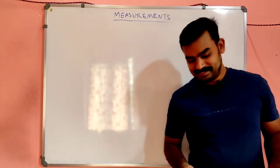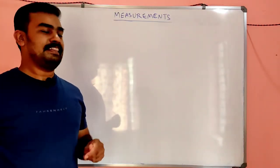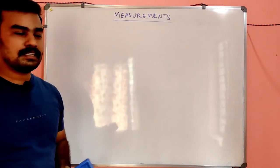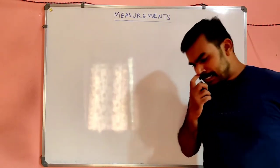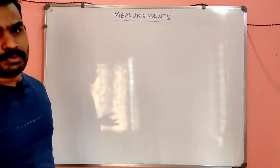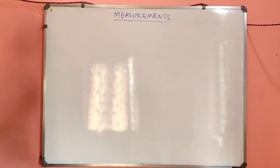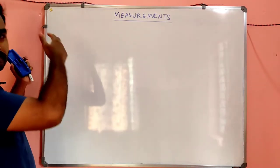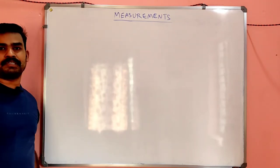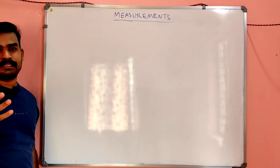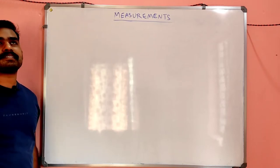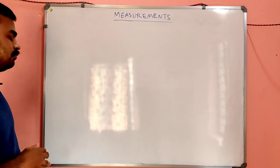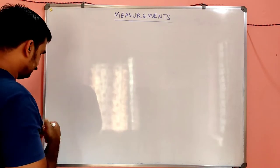Good morning. In the last class we studied the Wheatstone bridge and the balancing equation, and how to find the unknown resistance using the Wheatstone bridge. Today we are skipping Kelvin's double bridge as it is not that important for examination. The same principle applies: the product of opposite branch impedances will be equal under balanced condition. Today we are going to discuss measurement of self-inductance.